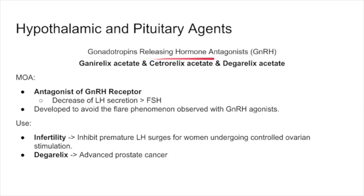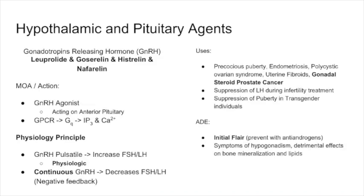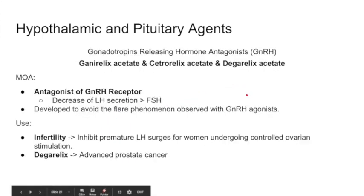To avoid the initial flare, we have GnRH antagonists — kisspeptin-releasing hormone antagonists: ganirelix, cetrorelix, and degarelix. These are antagonists that work more specifically in reducing LH greater than FSH and were developed to avoid the flare phenomenon observed with GnRH agonists. Unfortunately they don't work as well, so we still primarily use GnRH agonists. However, they can be used for infertility to inhibit a premature LH surge for controlled ovulation, and degarelix is used in advanced prostate cancer.